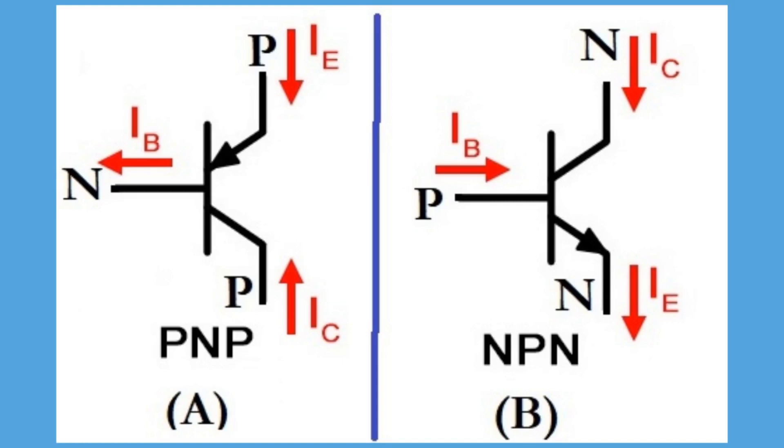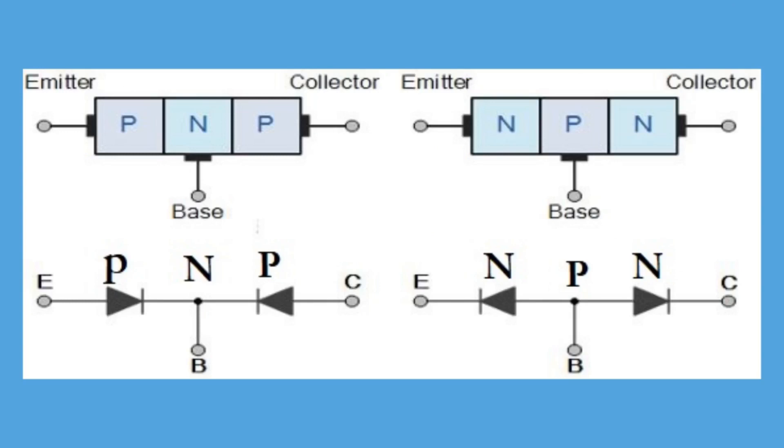The current moves from positive terminal to negative terminal just as the standard diode. Therefore, you should always note that in bipolar transistors the arrow points from P section to N section.